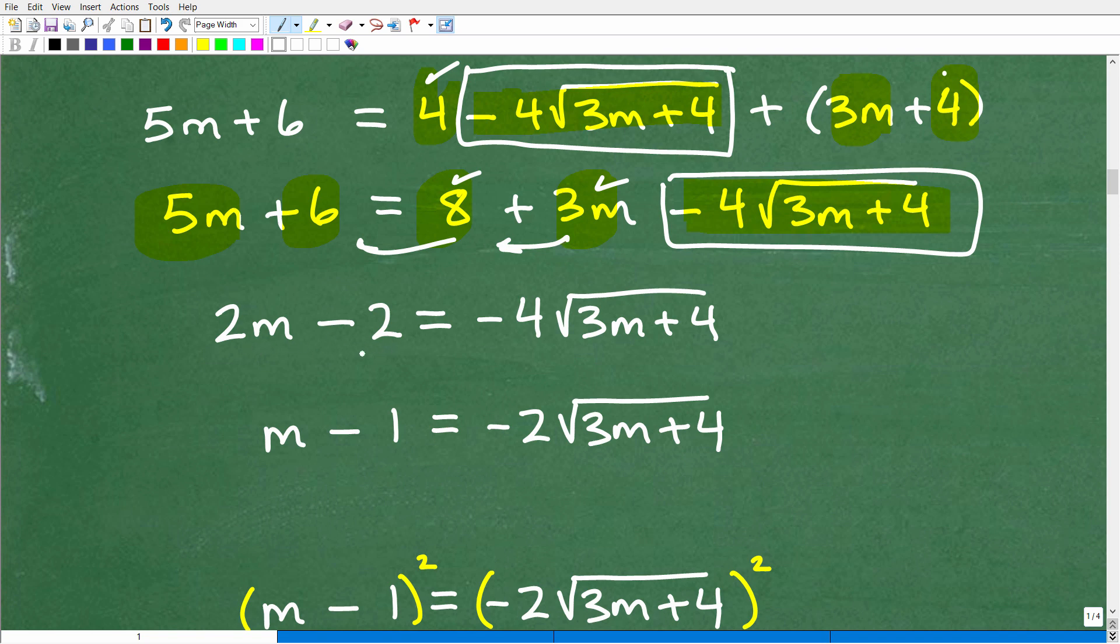Now, if you don't understand this, you definitely, this problem is too challenging for you at this moment. It doesn't mean that you won't be able to understand this. But you're going to have to work your way up to this. So just go ahead and study the steps and make sure you see what I have done. Okay, so here we go. We have 2m minus 2 is equal to negative 4 times the square root of 3m plus 4. So this is looking pretty good now. Okay, now I got this problem down to one radical. So when I square both sides, I can get rid of that radical. And we're finally getting to the point where we can solve this.